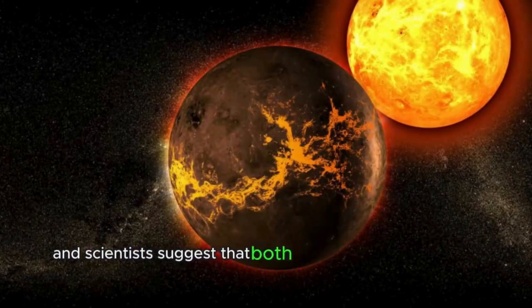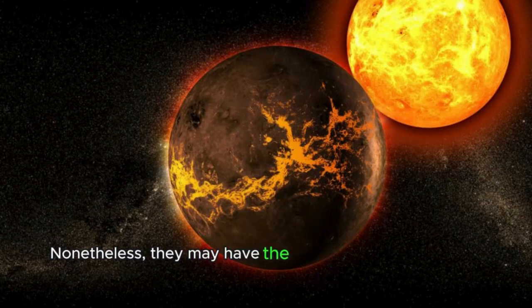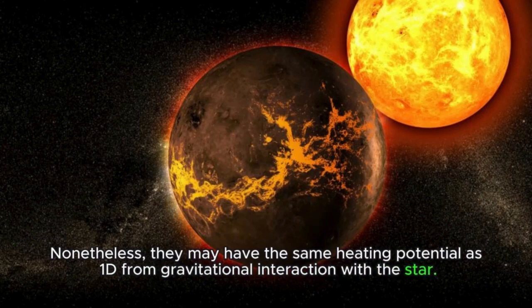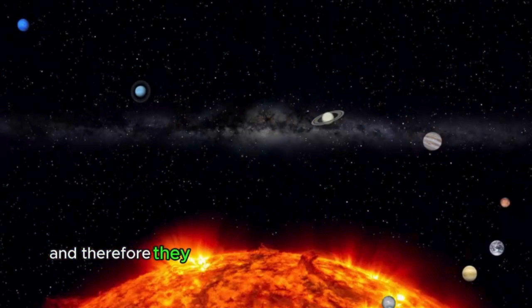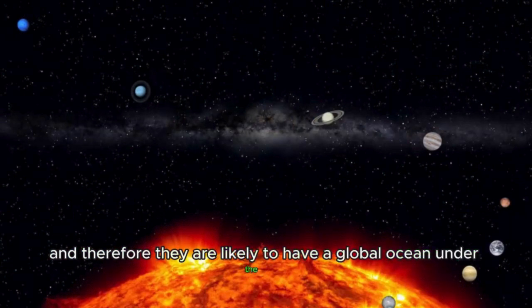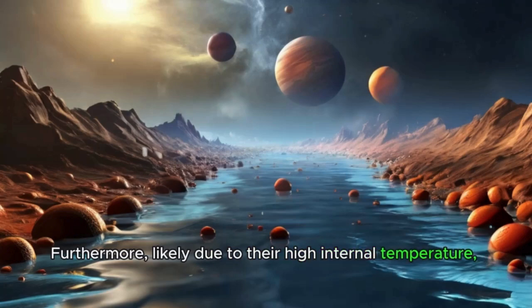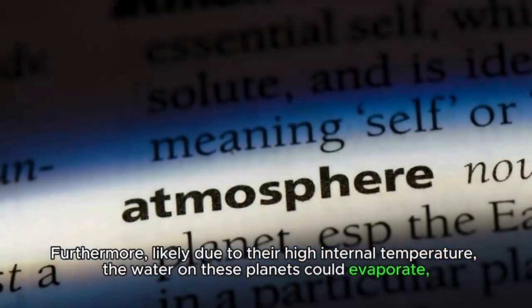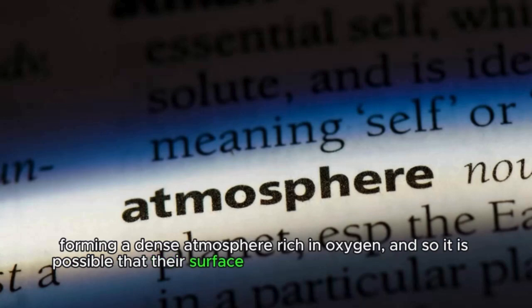And scientists suggest that both of them may be covered with a solid layer of ice. Nonetheless, they may have the same heating potential as 1d from gravitational interaction with the star. That is, despite the very little heat from the star itself, planets can be heated properly from the inside. And therefore, they are likely to have a global ocean under the ice. Furthermore, likely due to their high internal temperature, the water on these planets could evaporate, forming a dense atmosphere rich in oxygen, and so it is possible that their surface may not be that cold but could even be warmer than Earth's.